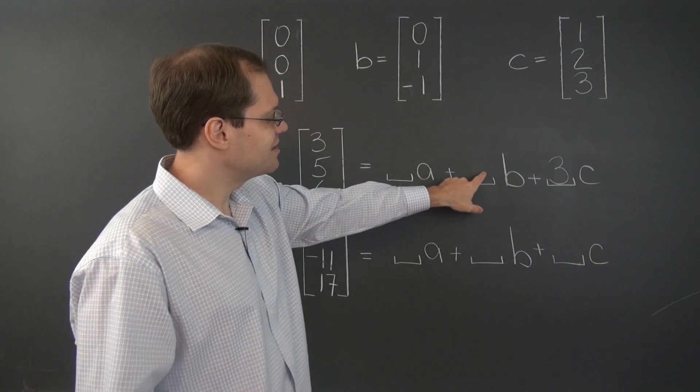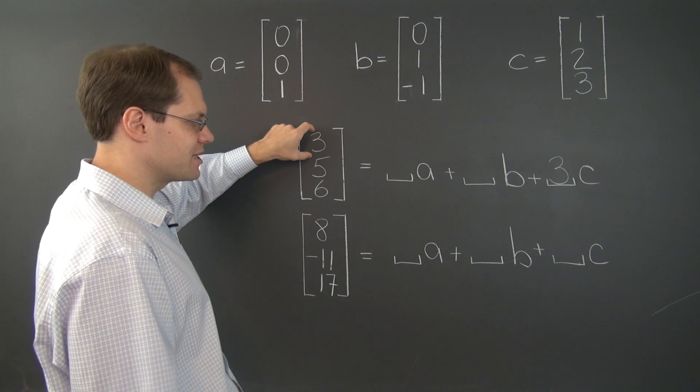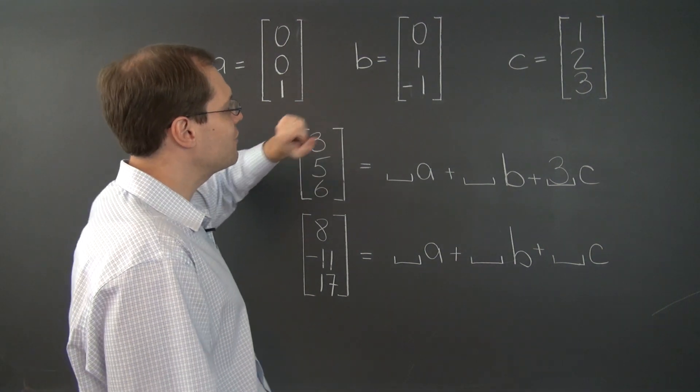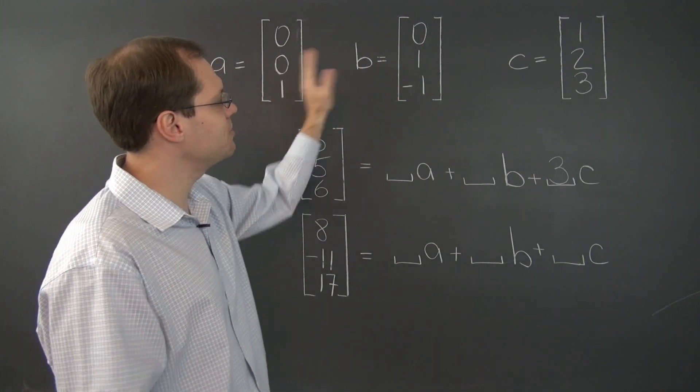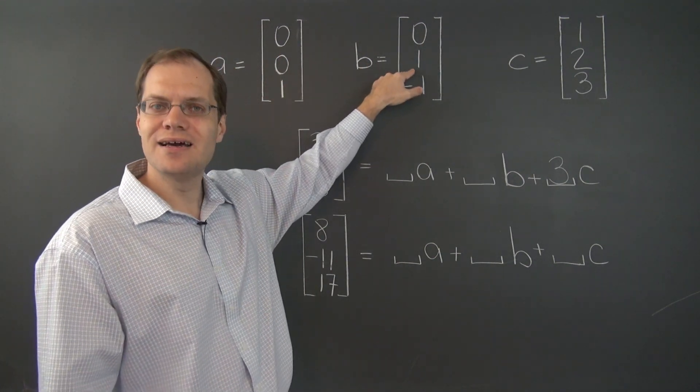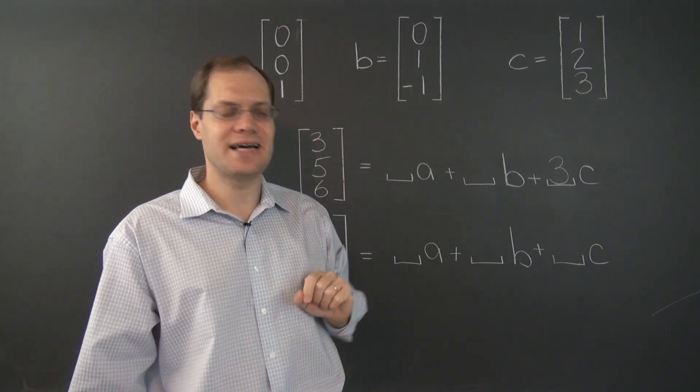And the answer is the second coefficient. Because having gotten the first entry correctly, we now have only one chance to get the second entry correctly. Because between the two remaining vectors, only B has a non-zero second entry. So we need to get that right.